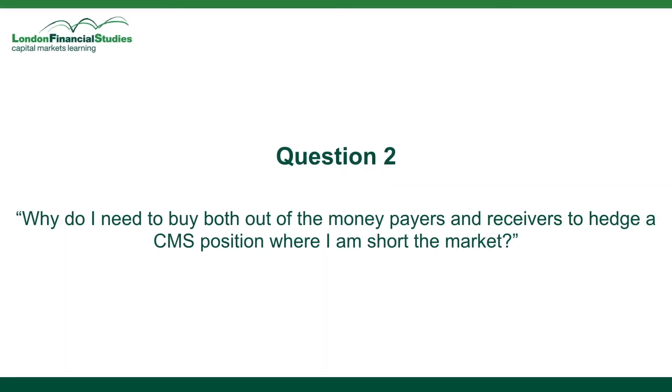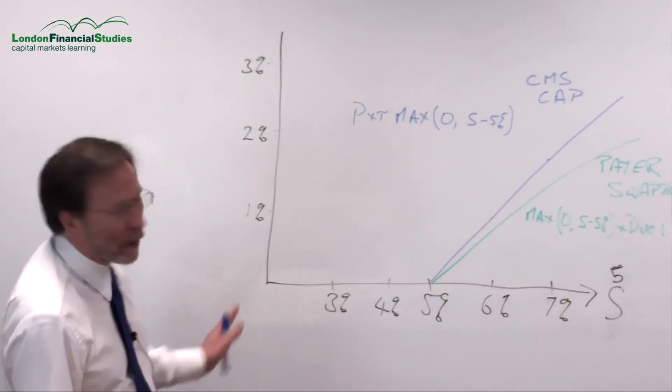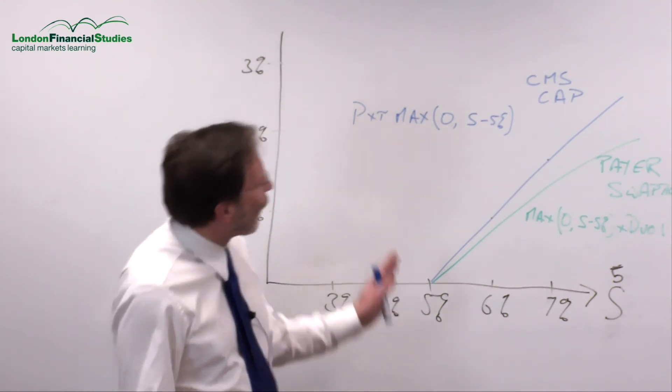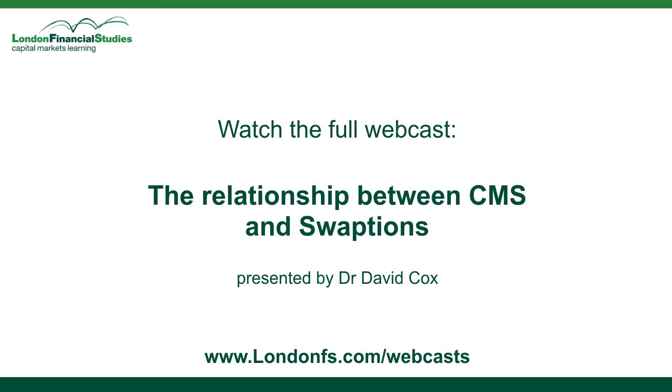Why do I need to buy both out-of-the-money payers and receivers to hedge a CMS position where I am short the market? So I've got a CMS position where I'm short the market. In other words, I benefit from sell-offs in rates. Well, I can replicate that by buying a CMS cap and selling.